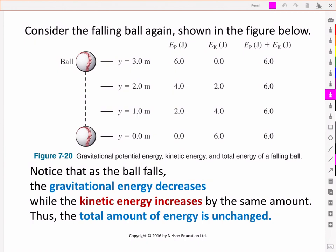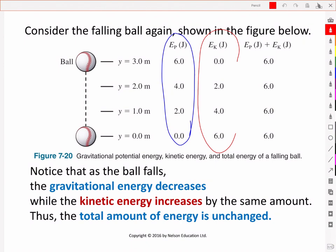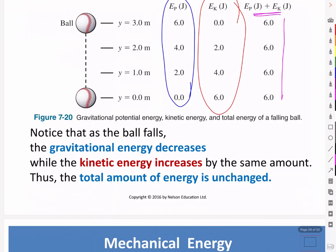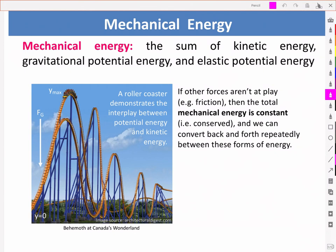Furthermore, this applies throughout the fall. As the gravitational potential energy decreases, the kinetic energy increases, and the total amount remains constant throughout — in other words, it is conserved. In particular, kinetic energy and potential energy — whether gravitational or elastic — are known as mechanical energy. And if non-conservative forces such as friction aren't at play, then the total mechanical energy is conserved, and we can convert back and forth repeatedly between these forms of energy.